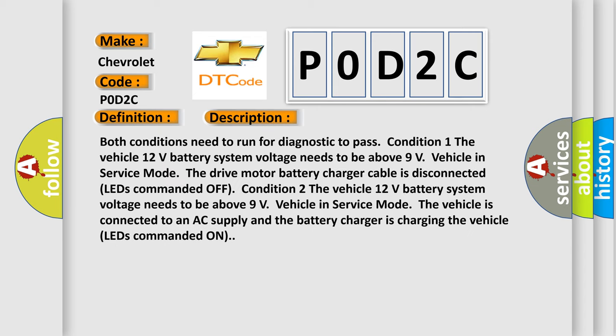Both conditions need to run for the diagnostic to pass. Condition 1: The vehicle 12-volt battery system voltage needs to be above 9 volts, vehicle in service mode, the drive motor battery charger cable is disconnected, and LEDs commanded off. Condition 2: The vehicle 12-volt battery system voltage needs to be above 9 volts, vehicle in service mode, the vehicle is connected to an AC supply, and the battery charger is charging the vehicle with LEDs commanded on.